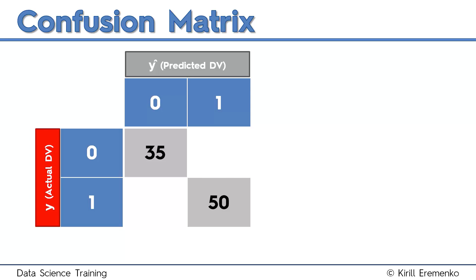So, 35 of the observations, let's say in total we have 100, and 50 of them actually did happen and our prediction was that they will happen, and 35 of them they didn't happen but we also said that they won't happen based on our model.